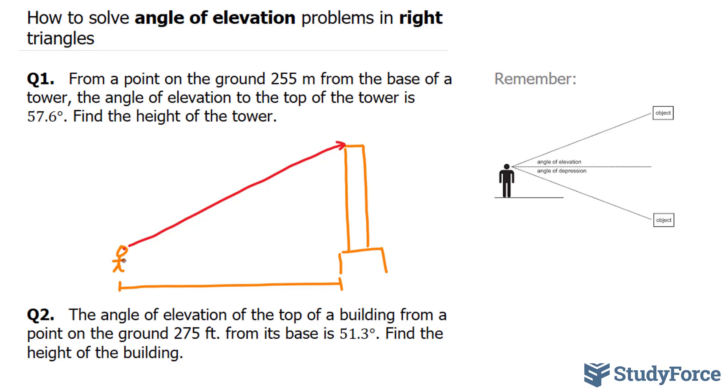From the observer to the base of the tower, we have this line. As mentioned in the question, it is 255 meters away, so I'm going to write down 255 meters here, and also an angle of 57.6 degrees.